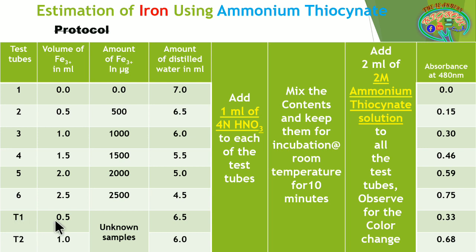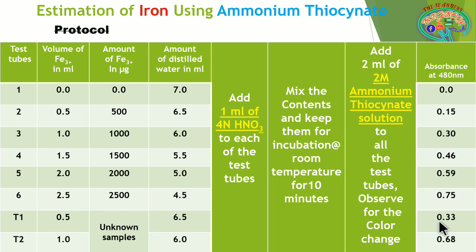We take duplicate samples — T1 duplicate and T2 duplicate — to confirm the readings. Both duplicates should correspond to each other. One reading from each duplicate was considered after one was reduced in the protocol. When doing the experiment, always take two duplicates of each sample to confirm the reading, since we do not know the approximate amount of iron in these unknown samples.